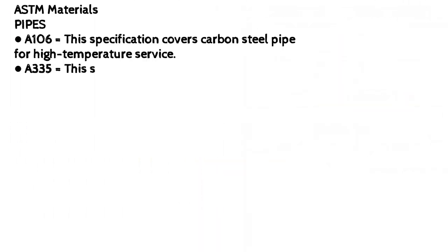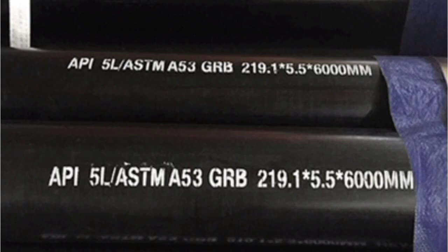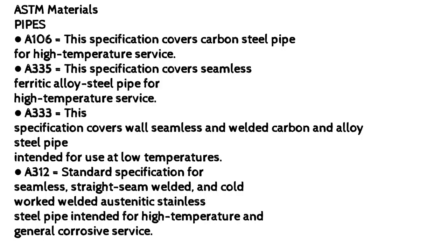ASTM materials — Pipes: A106 covers carbon steel pipe for high temperature service. A335 covers seamless ferritic alloy steel pipe for high temperature service. A333 covers seamless and welded carbon and alloy steel pipe intended for low temperatures. A312 is the standard specification for seamless, straight seam welded, and cold worked welded austenitic stainless steel pipe intended for high temperature and general corrosive service.